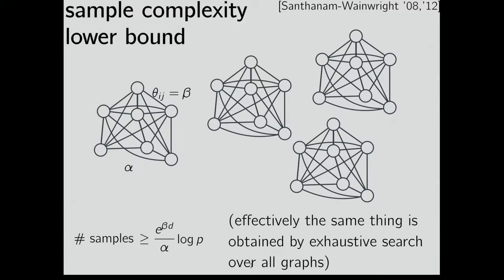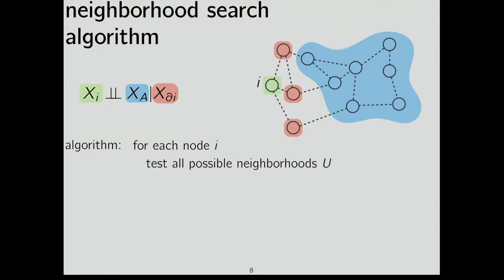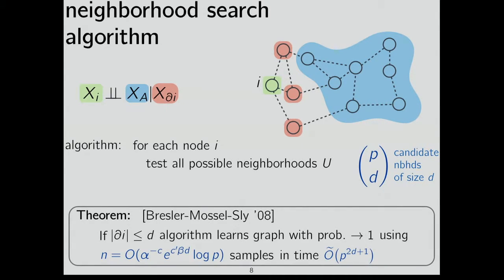You might ask: is this good or bad? Obviously, you don't want to spend this much computational expense searching over all graphs. One improvement, from a joint paper with Erhanan and Alan, uses the fact that your data comes from a sparse Markov random field. If degree is bounded by D, you can search over neighborhoods — there are P-choose-D neighborhoods of size D. The sample complexity is roughly the same, but the computational complexity is now polynomial for fixed D.